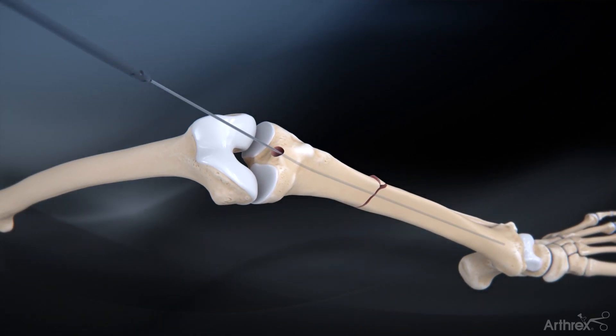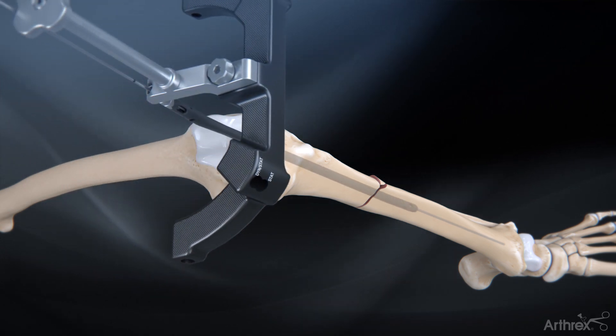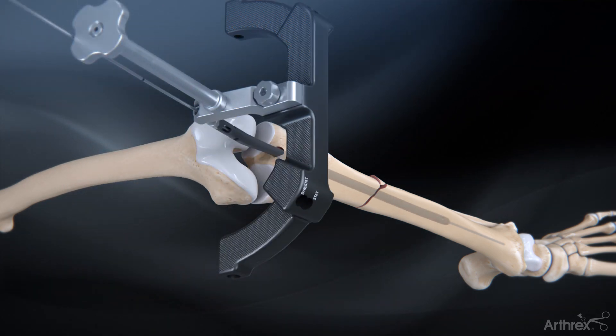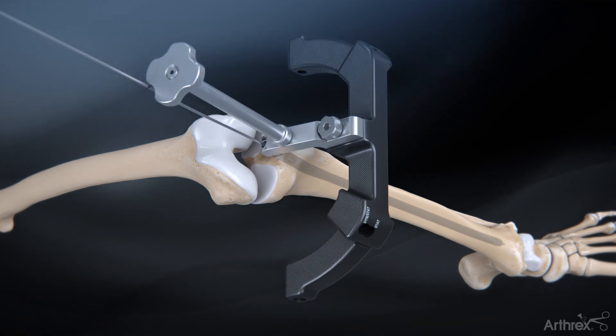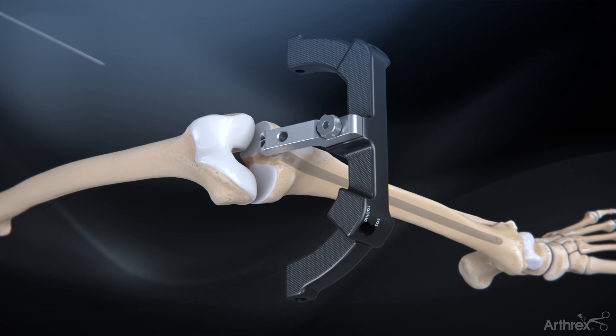Remove the entry tube and insert the nail over the ball nose guide wire and into the canal. Lightly strike the impactor pad with a mallet to complete the nail insertion. Remove the ball nose guide wire.